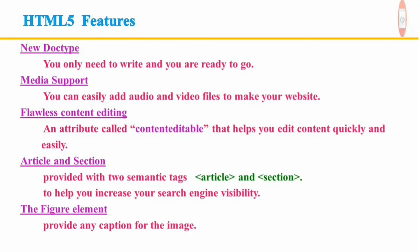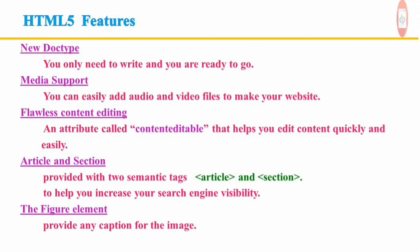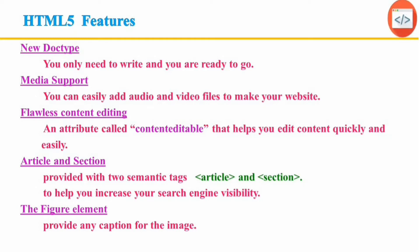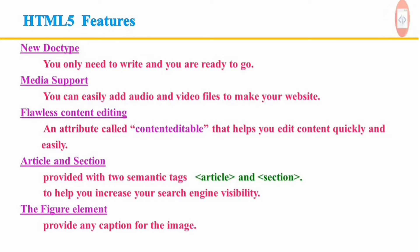Article and section: HTML5 is provided with two semantic tags, article and section, to help you increase your search engine visibility. This facilitates users to compose an article into multiple sections and integrate multiple articles into a single section. The figure element: the previous version of HTML lacked the ability to provide any caption for an image. In HTML5, there is a new figure element which can be combined with an element to easily associate a caption with other elements of an image.